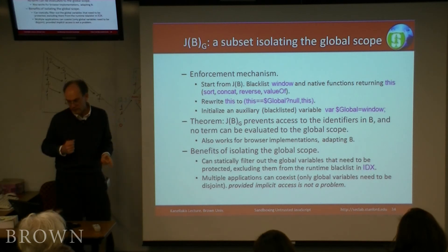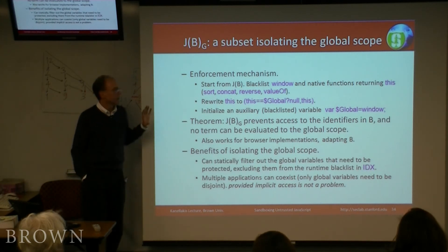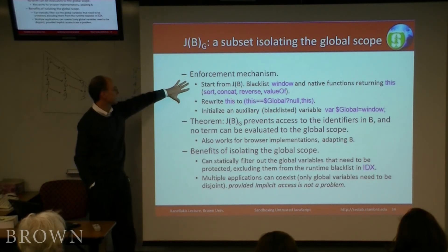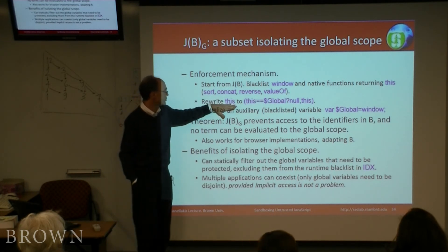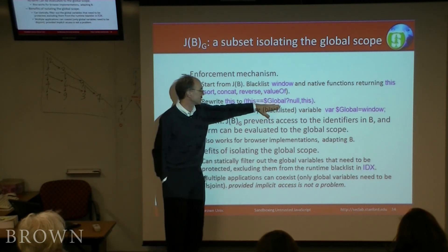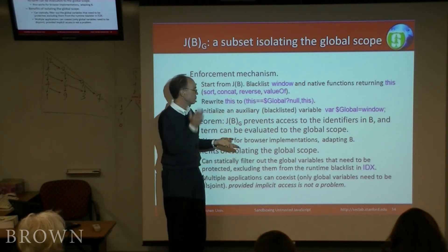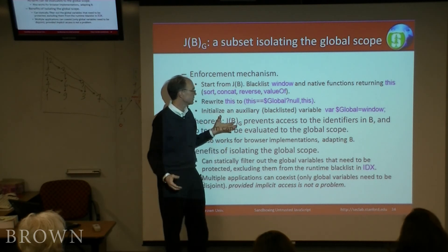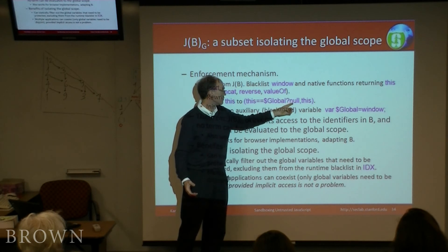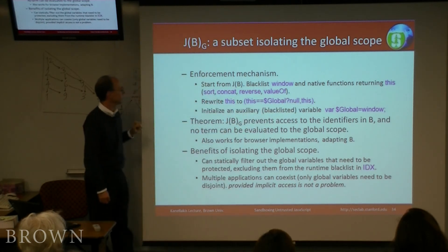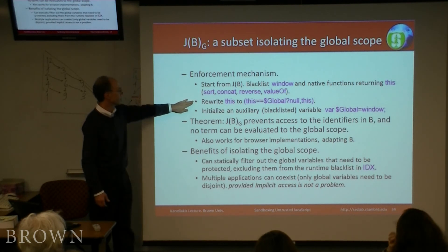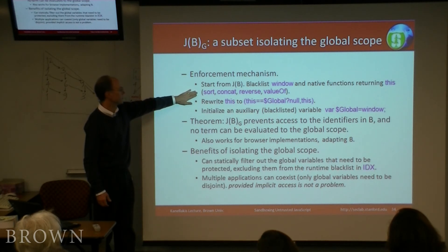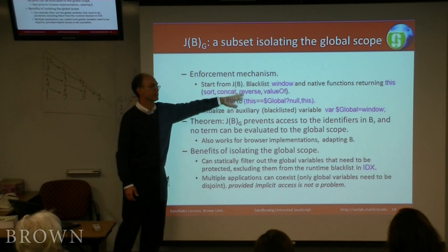That leads to the second set of issues: we need to make sure the special keyword `this` doesn't return a pointer to the global object or a local scope object. We have two ways of doing that. The first is to use our blacklisting mechanism and add some runtime tests to places where `this` is used, to make sure that if it points to the global object — the object whose properties are the global variables — we don't return any useful pointer; otherwise we return the original pointer value. So runtime checking ensures that `this` in JavaScript doesn't return something dangerous.